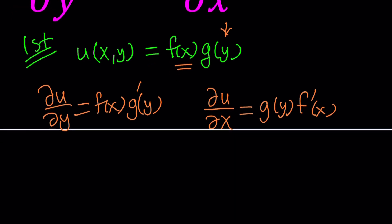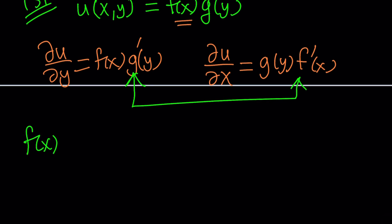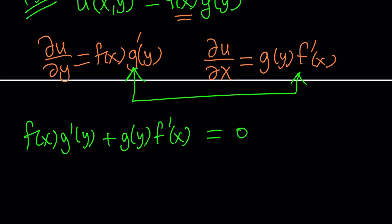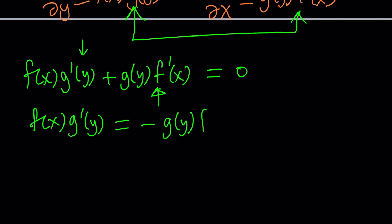Now we're going to add them, because their sum is supposed to be zero — that's what the original equation says. So if we add f of x times g prime of y plus g of y times f prime of x equals zero. We have two functions, f and g, and we need to separate the variables to get a better understanding. Since I already have the derivative of g here, I want to put this in a derivative-of-the-function divided by the function itself form. So let's subtract this from both sides first: f of x multiplied by g prime of y equals negative g of y multiplied by f prime.